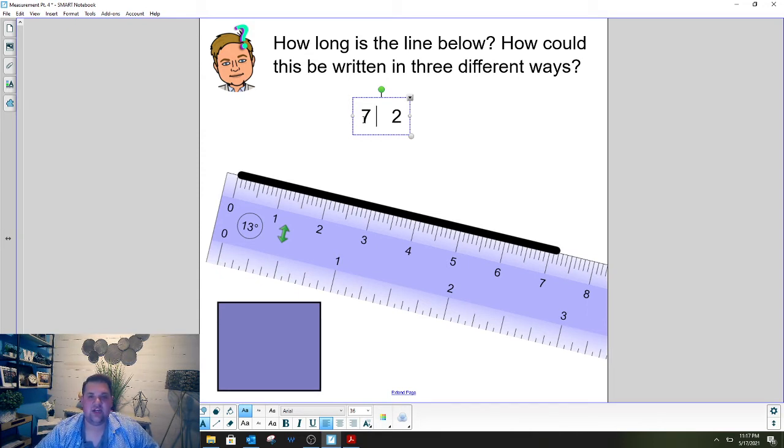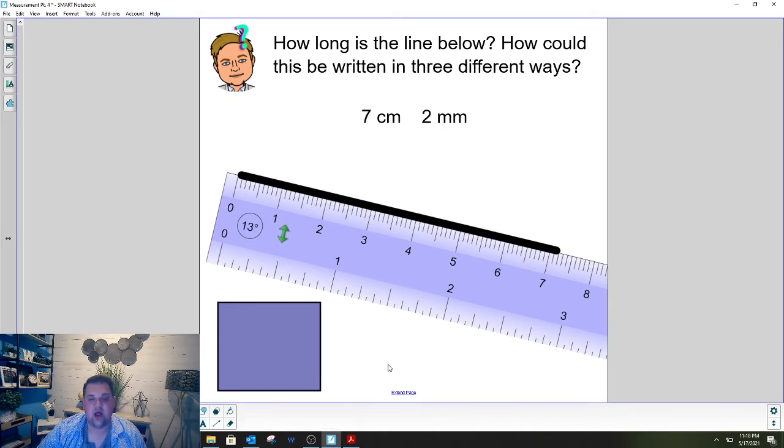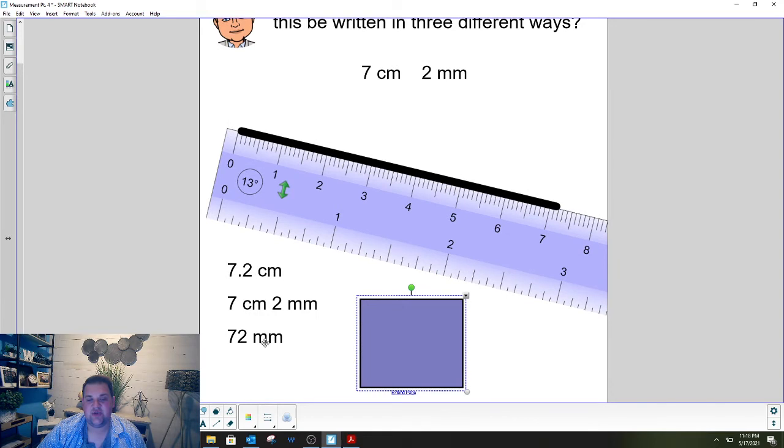Well I know that each number is centimeters and each of the little lines is millimeters so seven centimeters and two millimeters would be correct. Now there's actually three different ways we can write this. We can write it like this seven centimeters two millimeters. We could write 7.2 centimeters or lastly we could just write it all in millimeters and that would be 72 millimeters because in each centimeter there's 10 millimeters. So if I go 10, 20, 30, 40, 50, 60, 70, 1, 2, 72 millimeters.